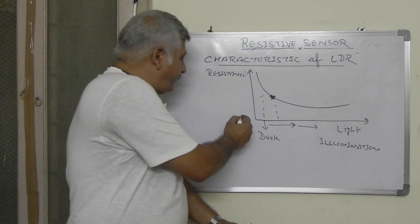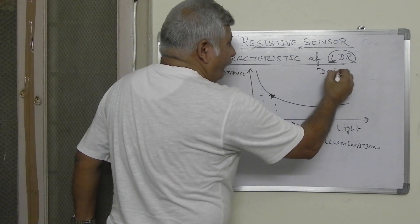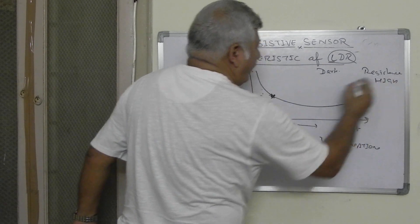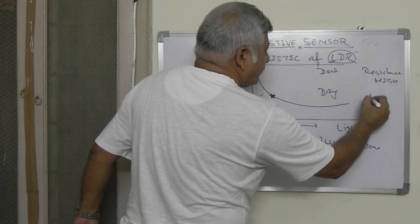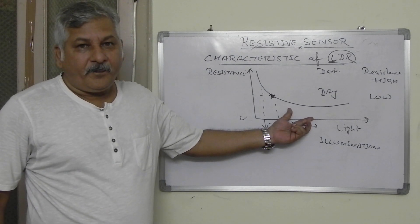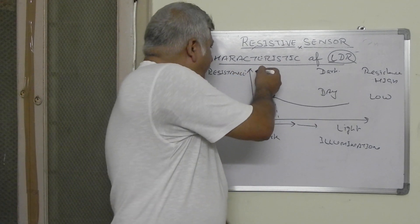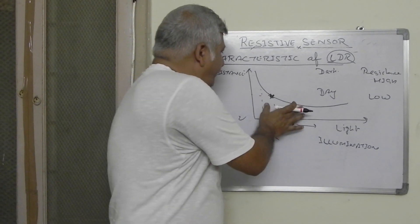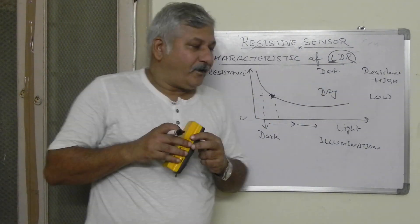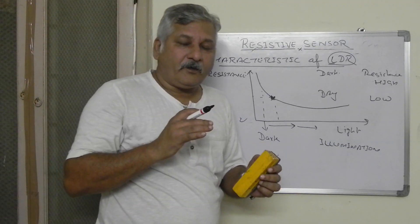In darkness, resistance is high; in daytime, resistance will be low. If you observe this graph, it is not a linear graph — there is an exponential variation. So if we are using an LDR in an application to develop some product, we must take care about what the resistance will be during different parts of the day or night, and accordingly design the system.